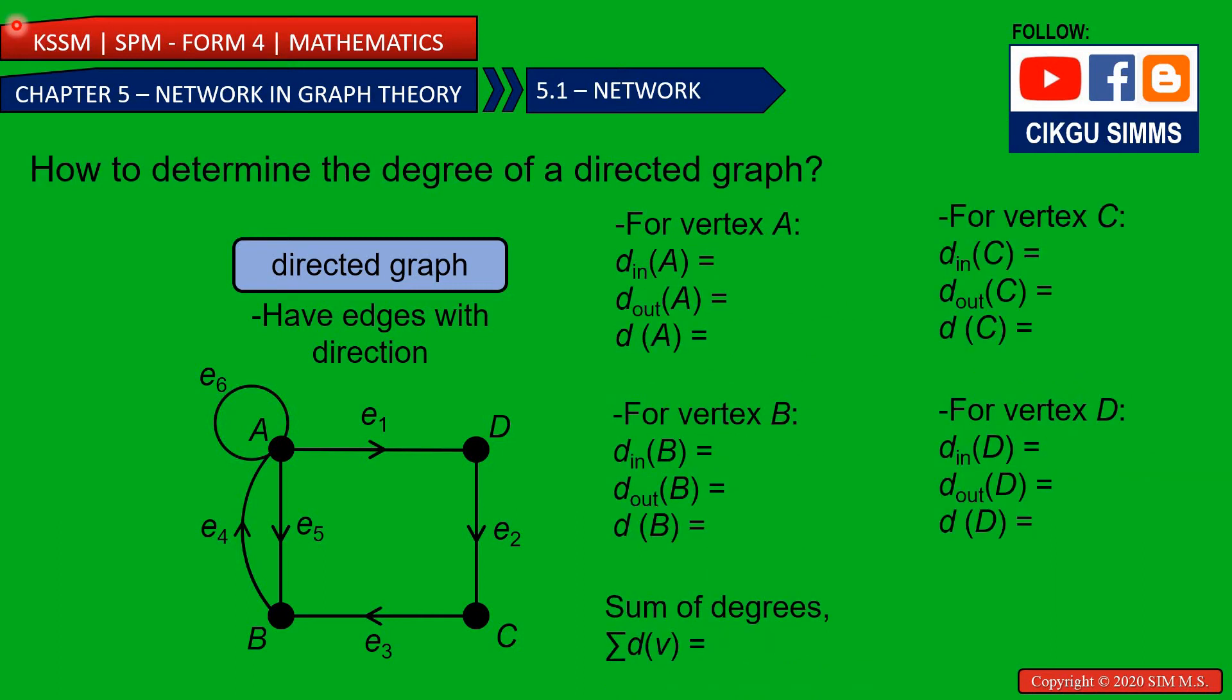So how to determine the degree of a directed graph? So for vertex A, degree in and degree out and also the total degree for A. So you need to find how to find this. So for vertex A, let's see the vertex A in.